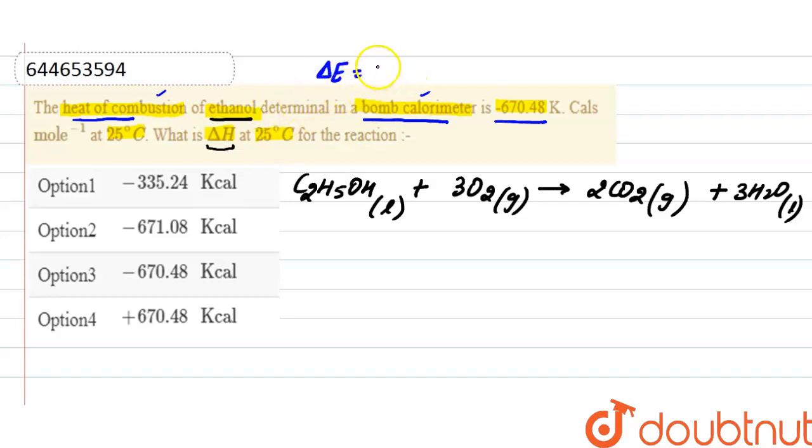Here it is -670.48 kilocalories per mole. As we know, internal energy equals delta H minus delta ng RT, where delta ng is the number of gaseous products minus the number of gaseous reactants.